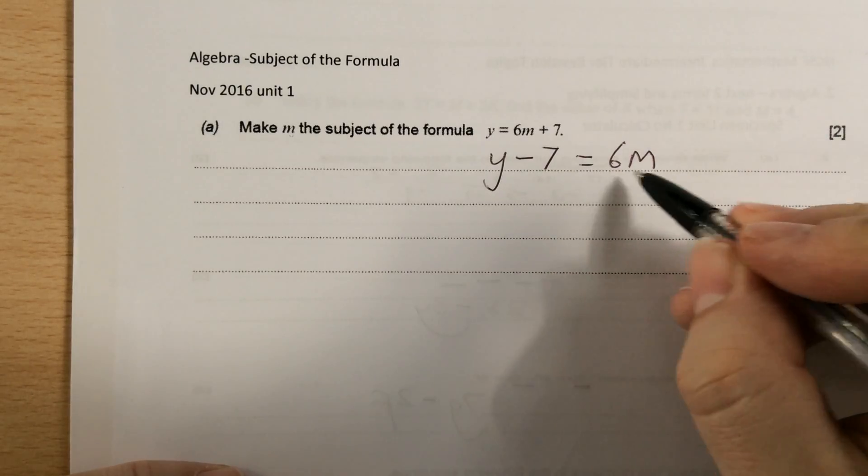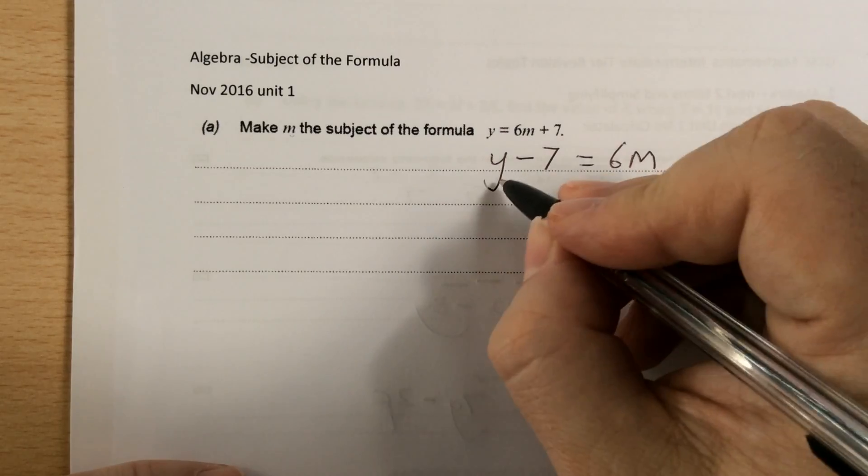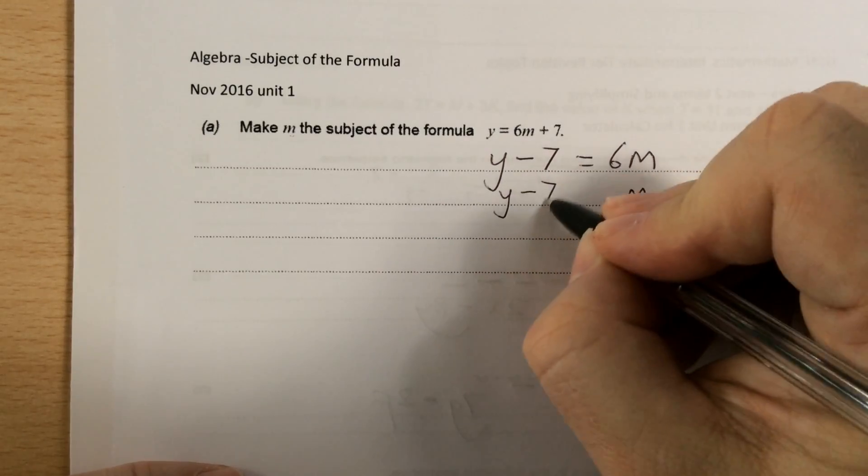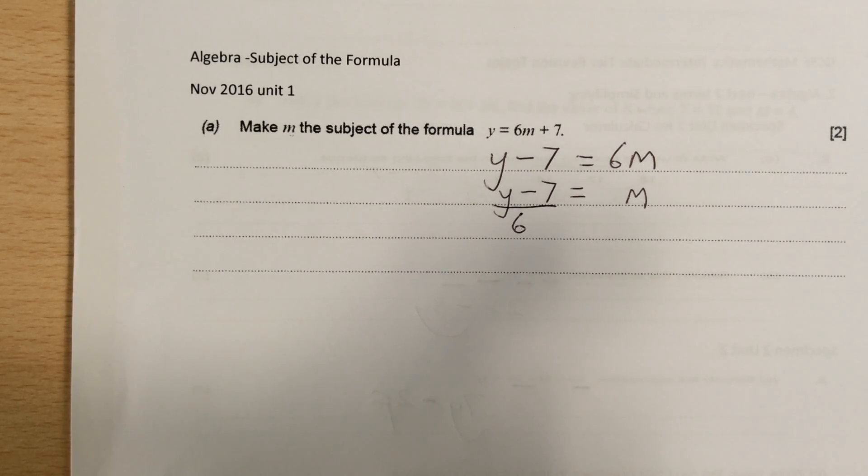I want what one M is now, so to get what one M is, I have to divide by the number in front of M. The number in front of M is 6, so I'm dividing it all by 6. The answer is y take away 7 divided by 6.